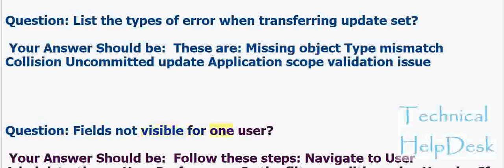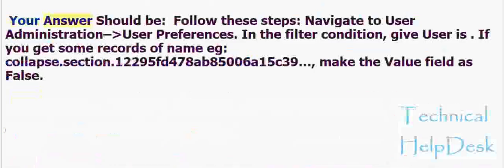Fields not visible for one user — follow these steps: navigate to User Administration > User Preferences. In the filter condition, give 'User is.' If you get some records of name, e.g., collapse.section.12295FD478AB85006A15C39, make the value field as false.